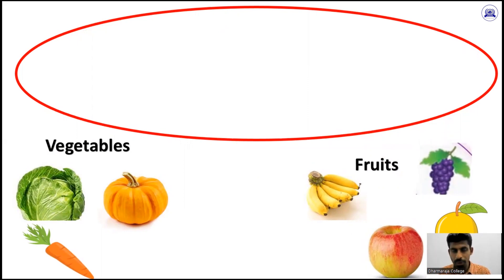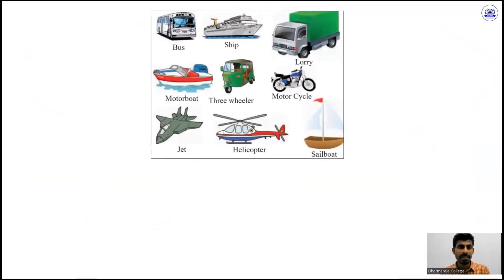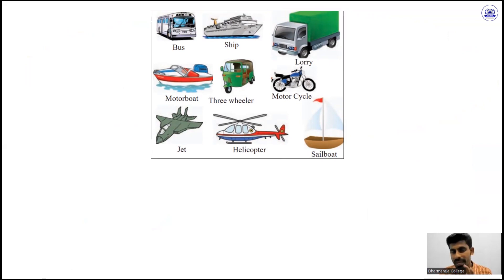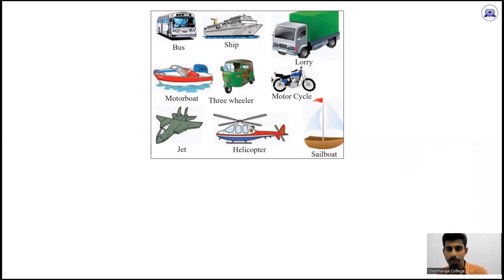So how many groups are there? Vegetables and fruits. I have taken this example from your textbook: bus, ship, lorry, motorboat, three-wheeler, motorcycle, jet, helicopter, and sailboat. You can categorize these into two categories — wheeled vehicle or non-wheeled vehicle. Wheeled vehicles are bus, lorry, motorcycle, and three-wheeler. Other vehicles are non-wheeled vehicles.